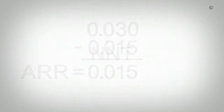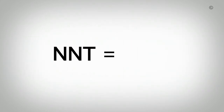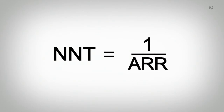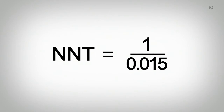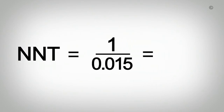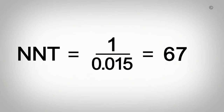As mentioned earlier, to calculate the number needed to treat, we divide 1 by the ARR, so 1 divided by 0.015 gives us an NNT of 66.7. Because we can't have half a person pregnant, or half a pregnancy, we round the NNT up to the nearest whole number, so our NNT is 67.